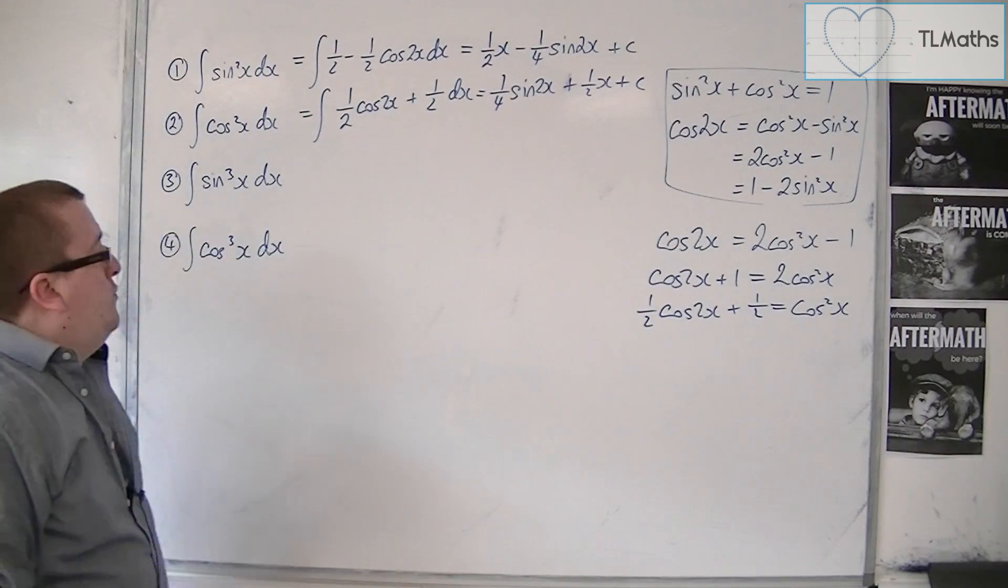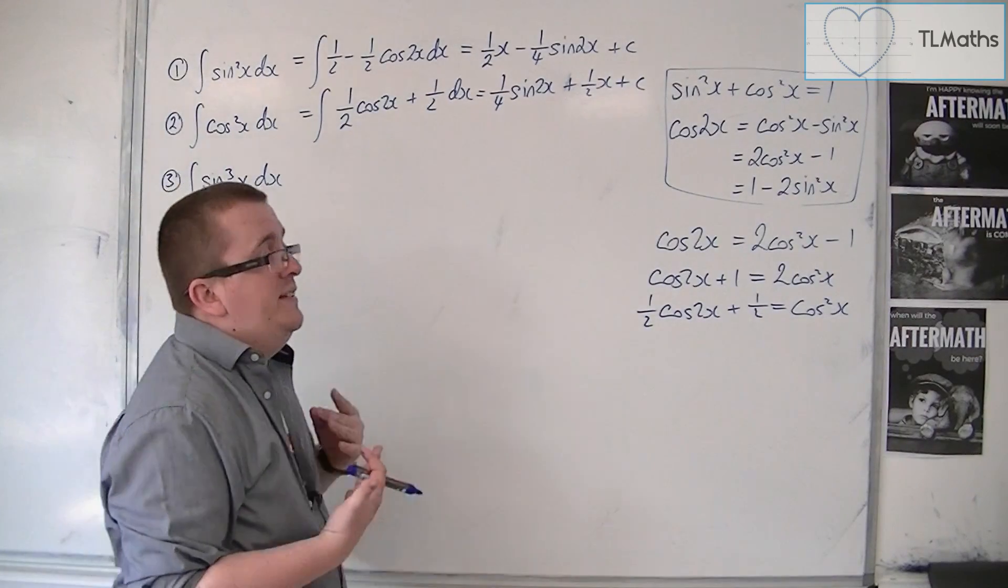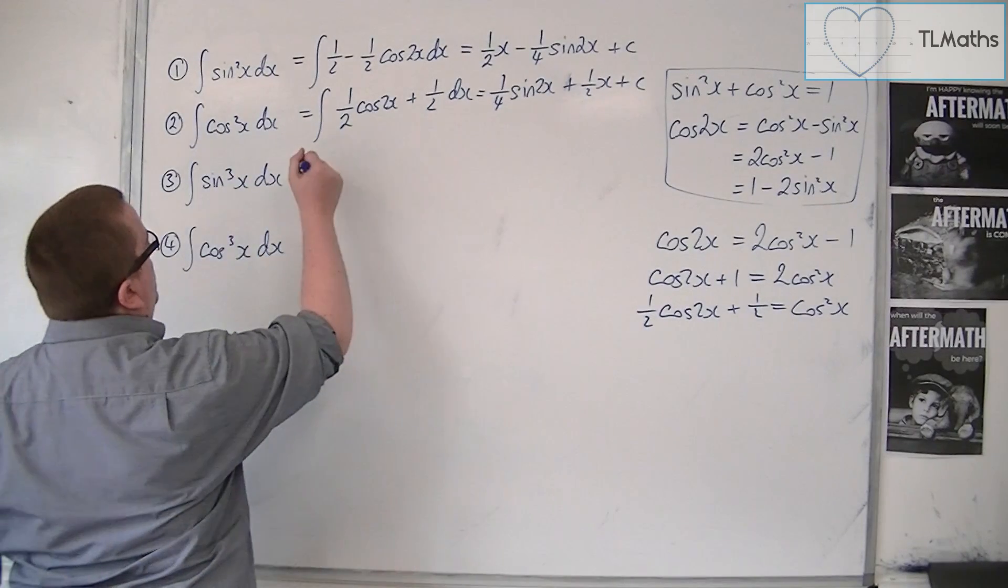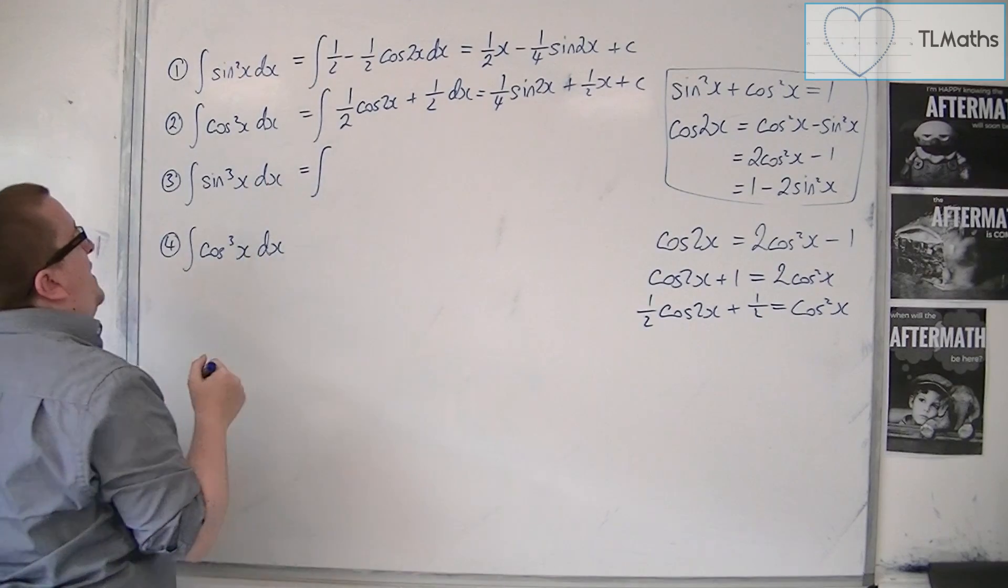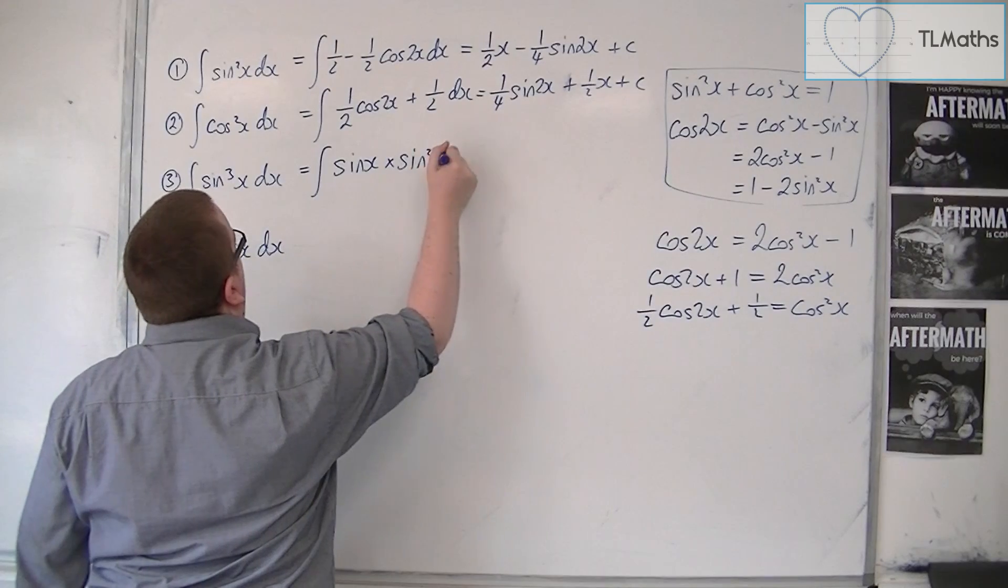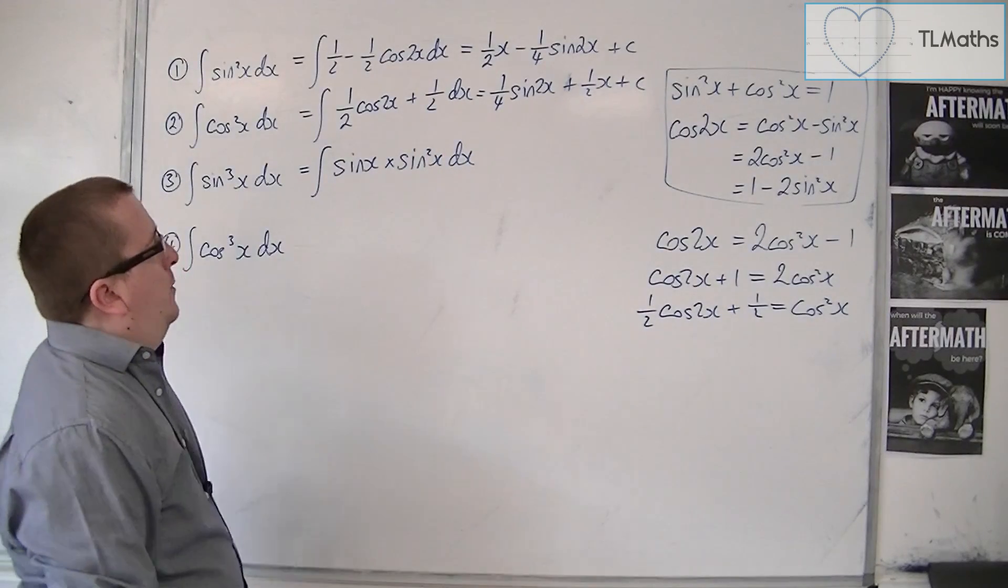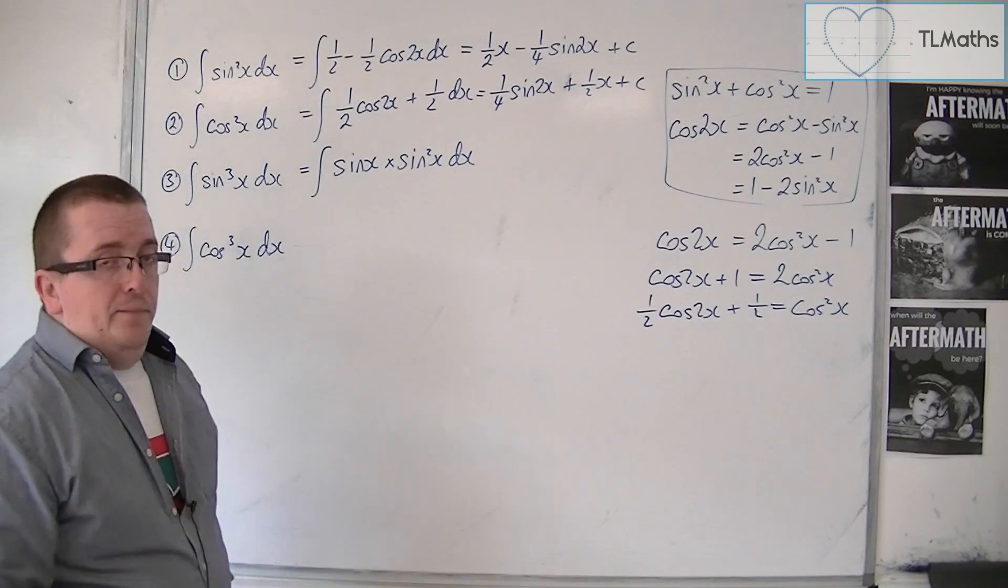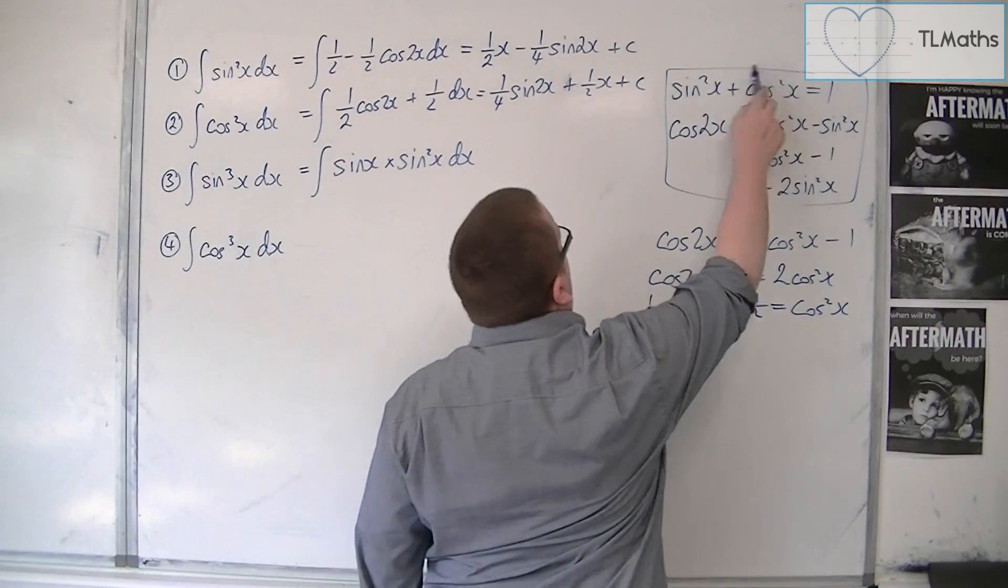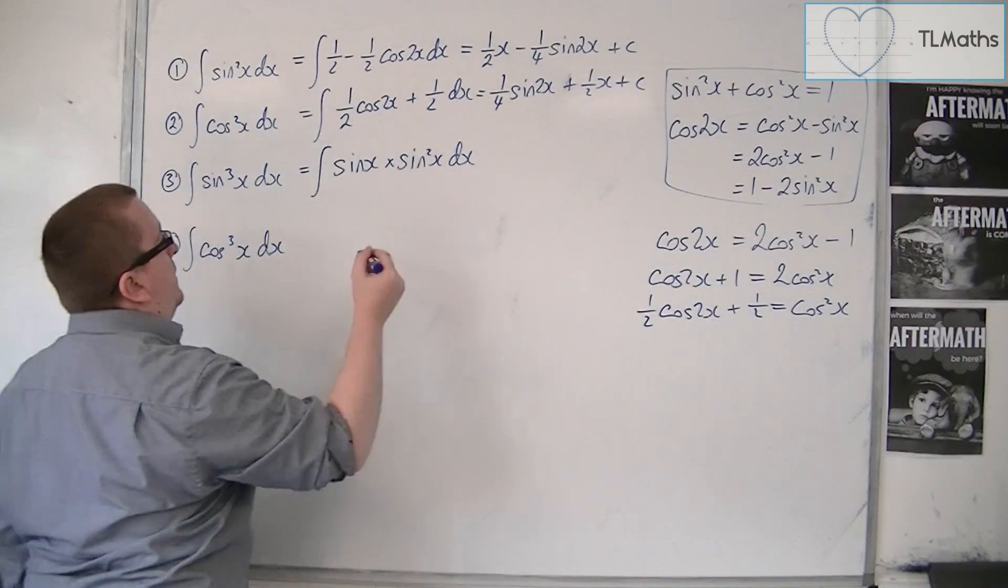Now for number 3, we've got sin cubed. Now we don't have any identities that involve sin cubed. So what we're going to have to do is we're going to have to write this as the integral of sinx times sin squared x. Now, the sin squared we can replace using this identity up here as 1 minus cos squared.